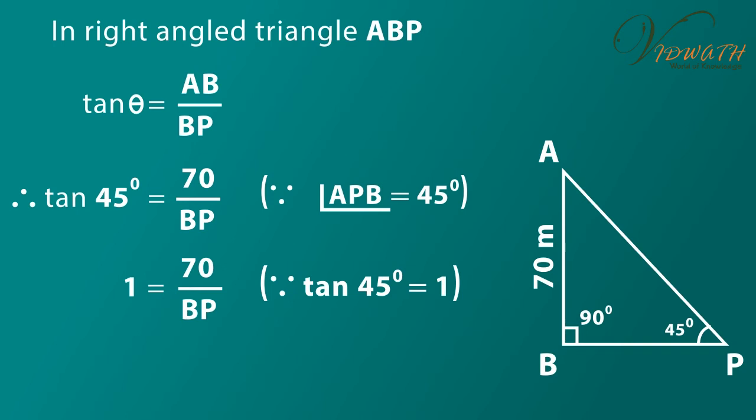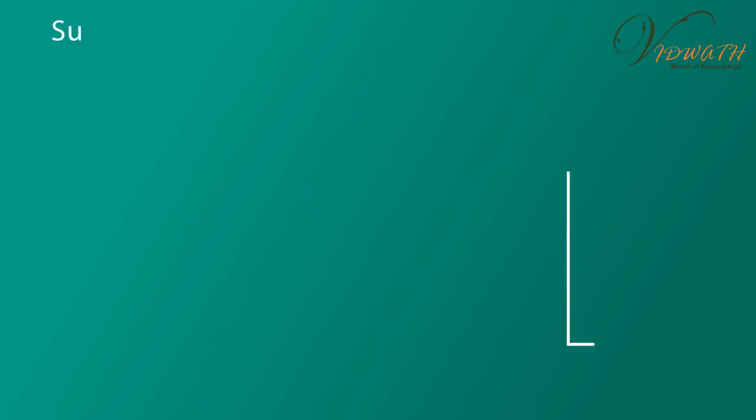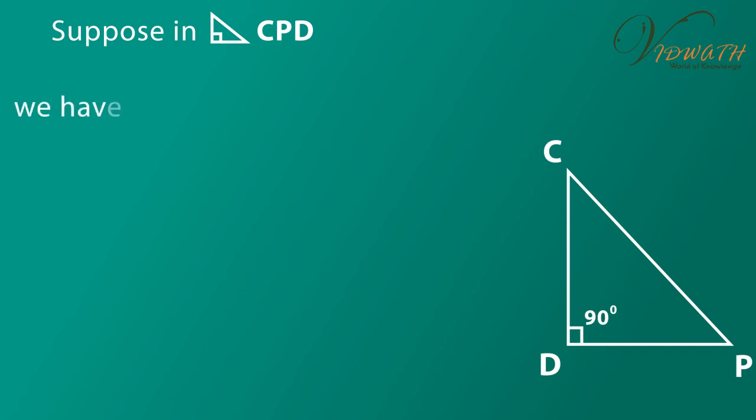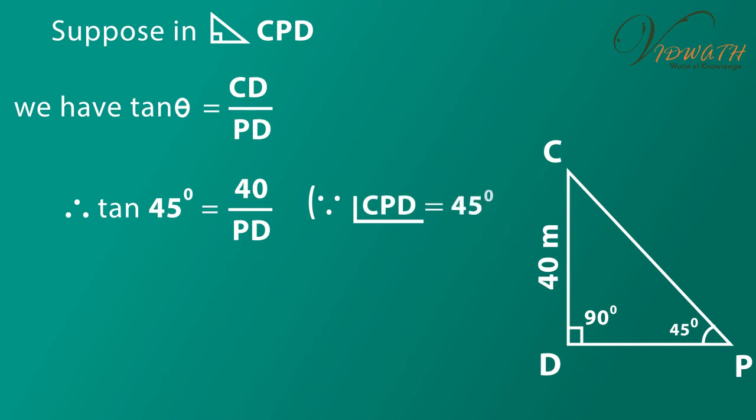Suppose in a right angled triangle CPD, we have tan theta is equal to CD by PD. Then substituting the value and simplify. Therefore tan 45 degree is equal to 40 by PD because angle CPD is equal to 45 degree. 1 is equal to 40 by PD. By cross multiplication we get PD is equal to 40 meter. Therefore PD is equal to 40 meter.